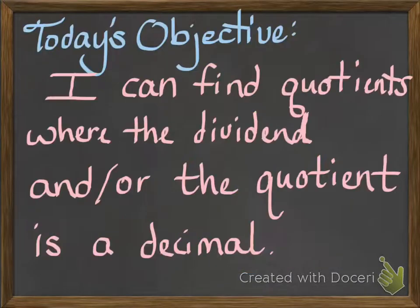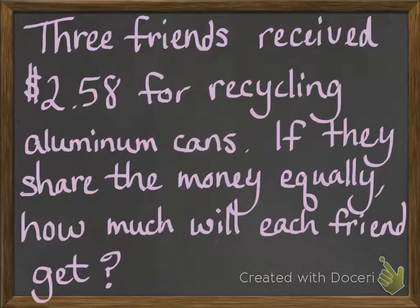Today's objective is: I can find quotients where the dividend and/or the quotient is a decimal. So today our answers might have decimals, and the dividend — the number that we're dividing — might have a decimal as well. And in addition to that, we're going to be using the regular algorithm, which means we're going to be using long division to find our answers.